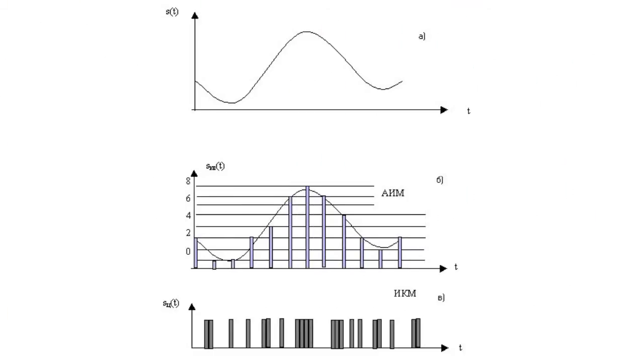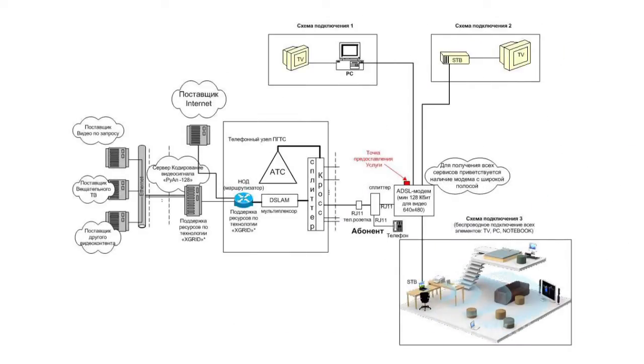Pulse code modulation PCM is a method of analog signal encoding which uses a series of short pulses for their transfer. Pulse code modulation is most widely applied in coding and decoding systems.